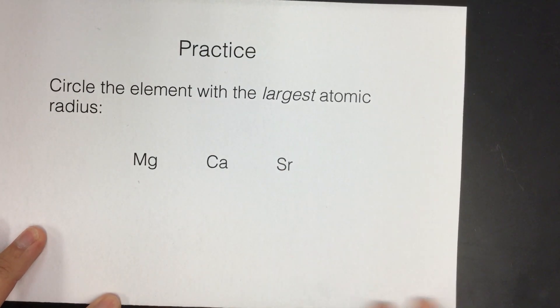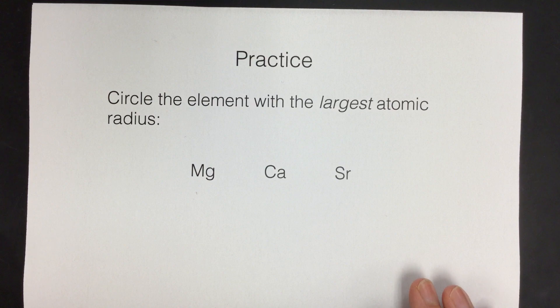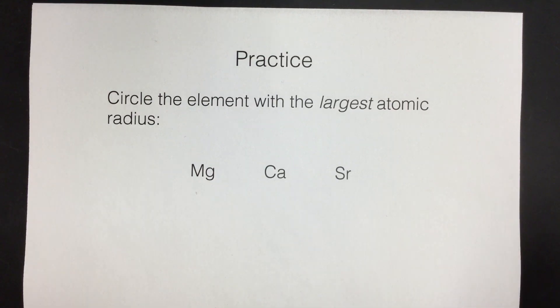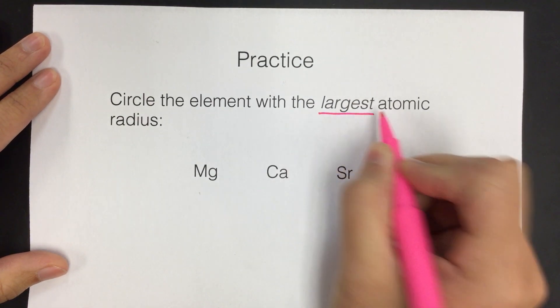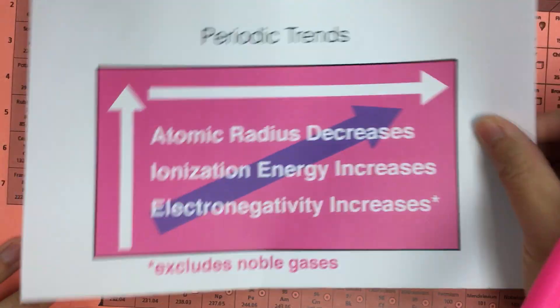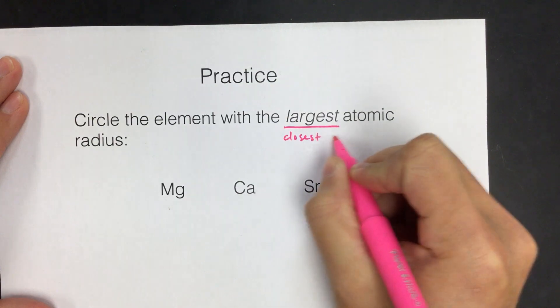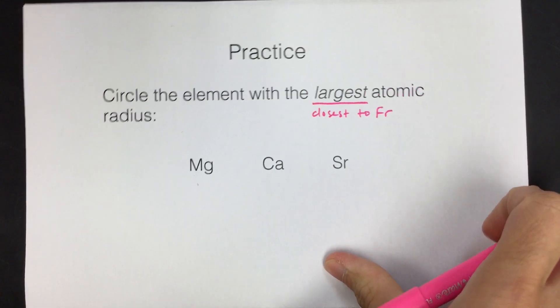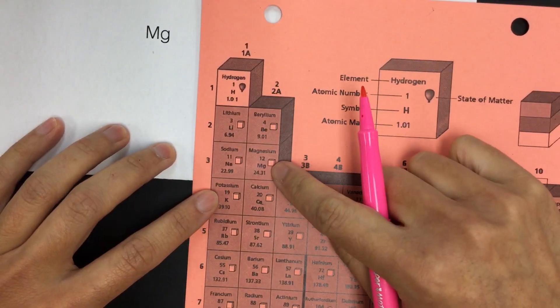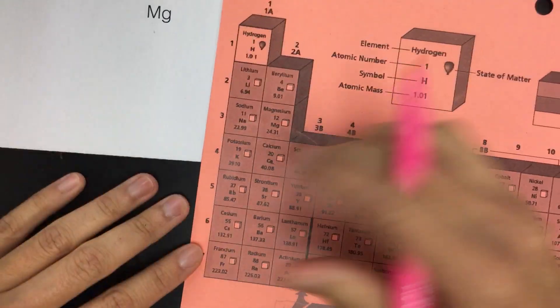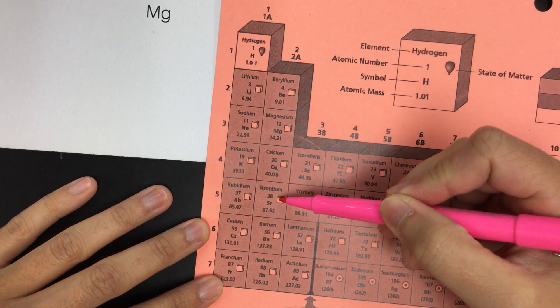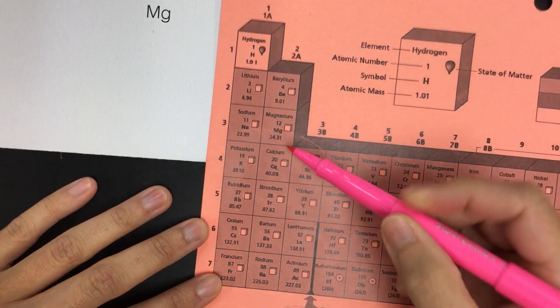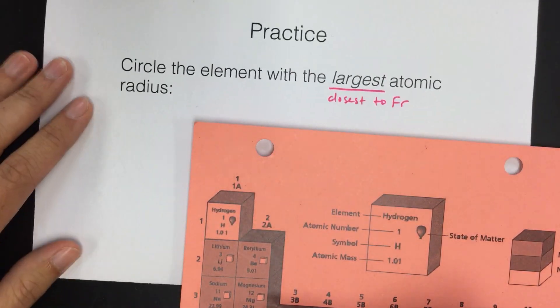So let's start with this question from the notes. Circle the element with the largest atomic radius. And what we can do is just compare helium and francium. If we want the largest, right, which end was the big end? Helium or francium? Francium is going to be the big end. So we want closest to francium. So let's compare. We're looking at magnesium, calcium, and strontium. So magnesium, and they should all kind of be close together. We'll always ask you ones that are kind of easy to find, clumped together. Magnesium, calcium, and strontium are in the same family here. And we want the largest one. So we want the one that's closest to francium.